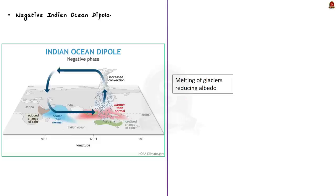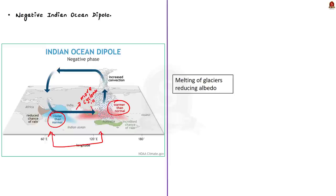The Indian Ocean Dipole is defined by the difference in sea surface temperature between the western and eastern Indian Ocean. A negative Indian Ocean Dipole occurs when the eastern Indian Ocean is warmer than the western Indian Ocean. During negative Indian Ocean Dipole, since the eastern Indian Ocean is warmer, the number of cyclones forming in the Bay of Bengal is higher — which is why there were back-to-back low pressure systems forming in the Bay of Bengal in July and August.